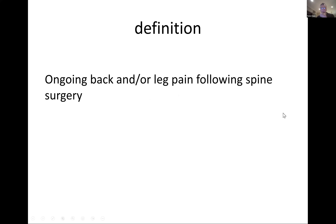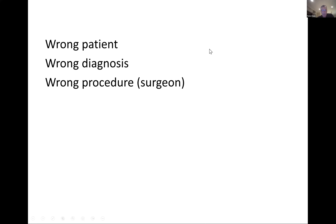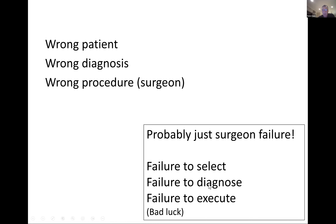The definition of failed back surgery is ongoing back or leg pain following spine surgery — a broad definition. You can break this down into three components: the wrong patient, wrong diagnosis, wrong procedure, or maybe the wrong surgeon. It's probably just surgeon failure in the sense that you failed to select the correct patient, failed to diagnose, or failed to execute.